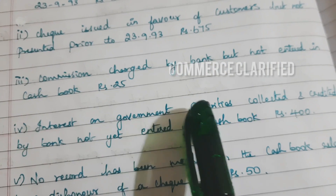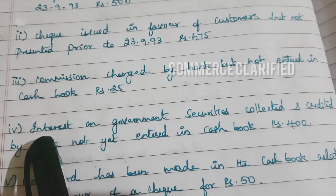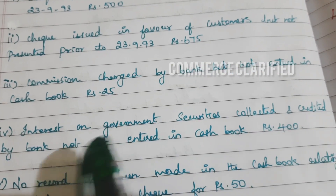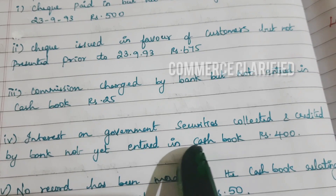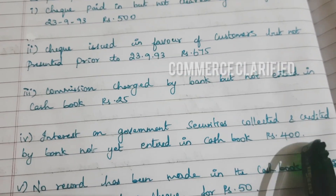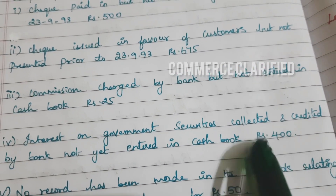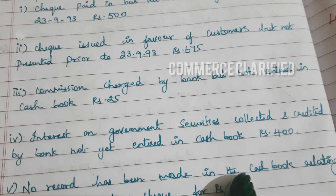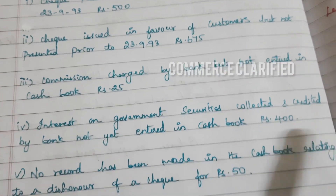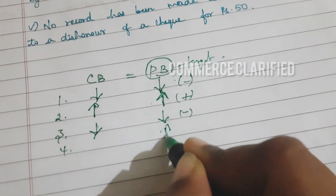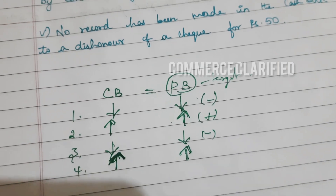Fourth one: Interest on government securities collected and credited by bank. Interest on government securities — the interest collected and credited by bank account, not yet entered in cash book, but credited directly by bank. Cash book: four hundred rupees. Then bank balance is less, cash book balance is less. Cash book and pass book are equal. Pass book is auto credit, pass book balance is less. Cash book will increase four hundred rupees, so the two are equal.